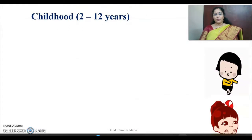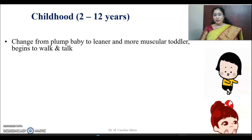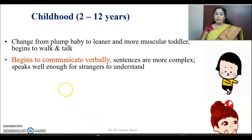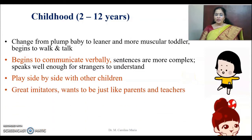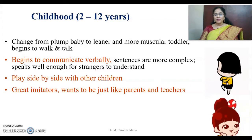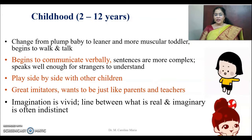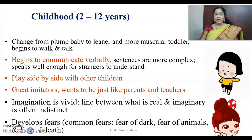The stage between two to twelve years is called the childhood stage, divided into early childhood (two to six years) and late childhood (six to twelve years). There is a change from a plump baby to a leaner, more muscular toddler. The child begins to walk, talk, and communicate verbally. Sentences become more complex and they speak well enough for strangers to understand. They play side by side with other children and are great imitators, wanting to be just like their parents or teachers. Imagination is very active at this stage, with a fine line between what is real and what is imaginary.